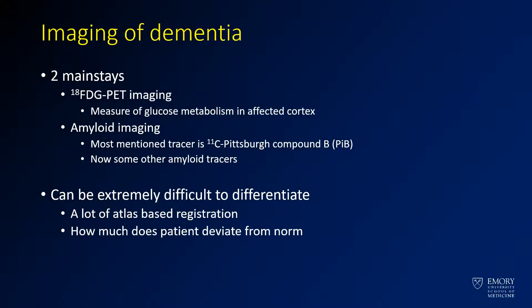Before we move on to the general cases, I just want to give you a quick overview about imaging of dementia. You might see one or two questions about this. The two mainstays of dementia imaging are FDG PET, which looks at glucose metabolism — typically areas of decreased metabolism — and amyloid imaging, in which you're looking for direct deposition of amyloid.